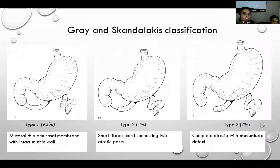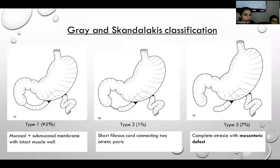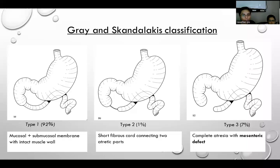Gray and Skandalakis classified duodenal atresia into three types. Type 1, the most common, involves mucosal and submucosal membrane with intact muscle wall. Type 2 is complete atresia; however, both proximal and distal parts are connected by a short fibrous cord. Type 3 is complete atresia with complete separation and associated mesenteric defect.